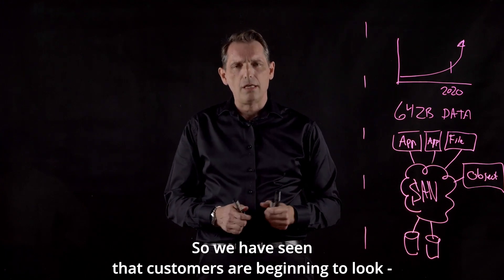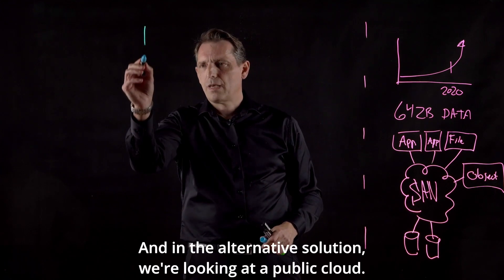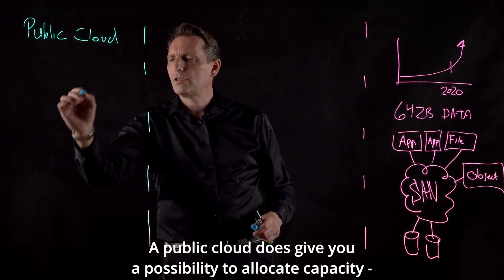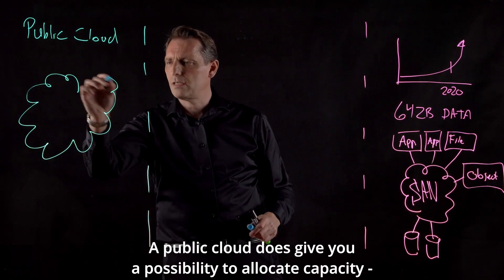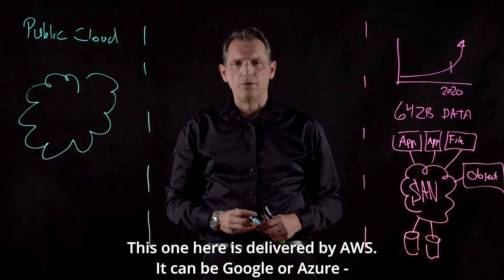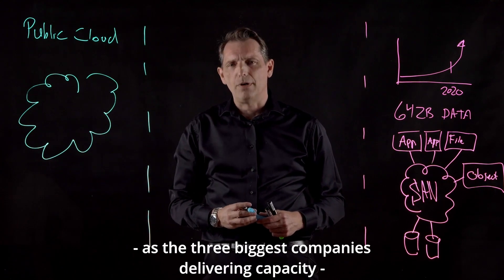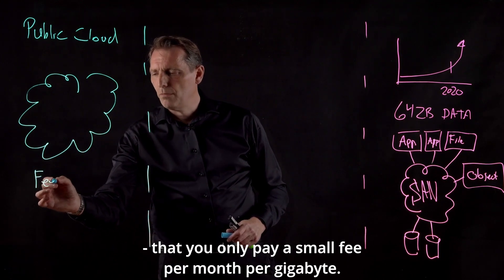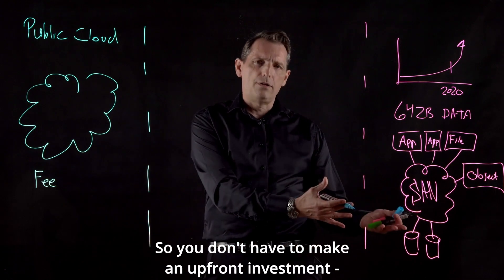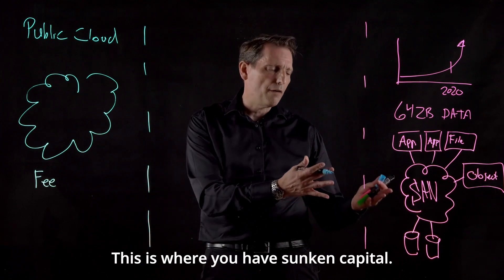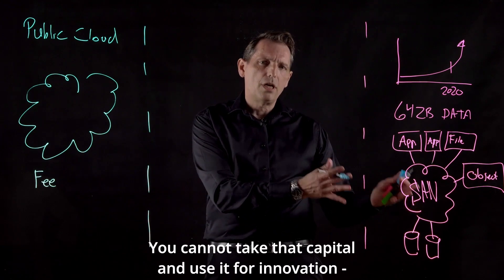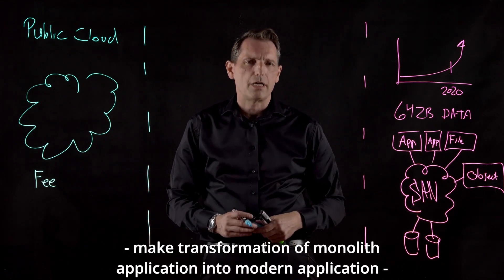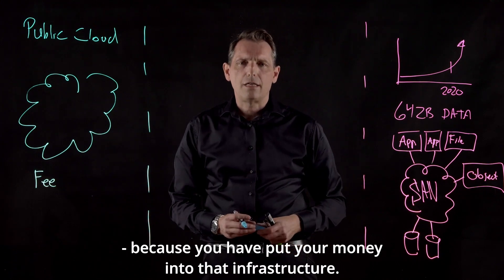We have seen that customers are beginning to look at an alternative to on-premises infrastructure, and that alternative is what we call public cloud. Public cloud gives you the possibility to allocate capacity to your production environment. This is delivered by AWS, Google, or Azure — the three biggest companies delivering capacity. The really appealing thing is that you only pay a small fee per month per gigabyte, so you don't have to make upfront investments like you do in your traditional environment, where you have sunken capital that you cannot use for innovation, new software, new projects, or transforming monolithic applications into modern applications.